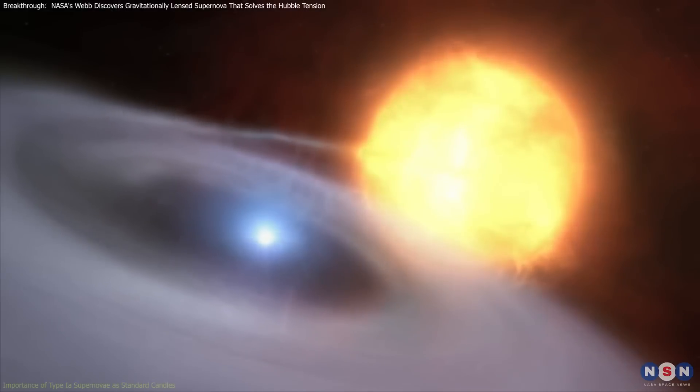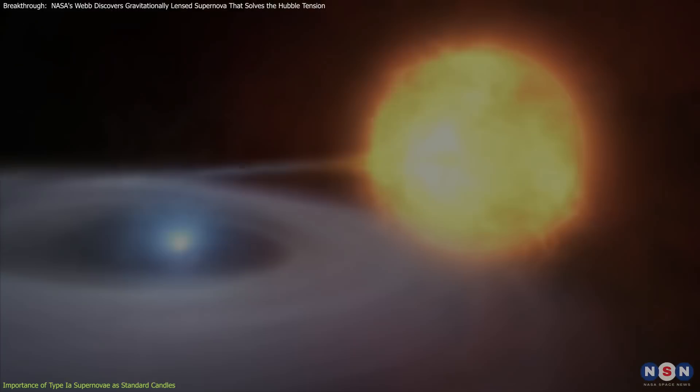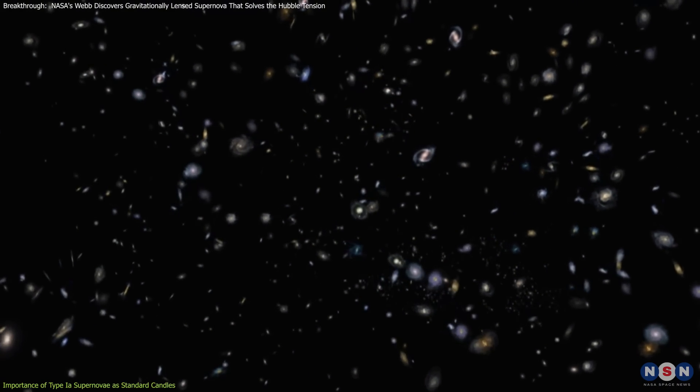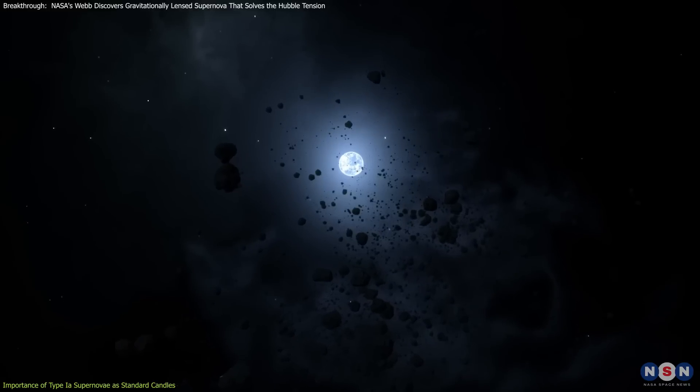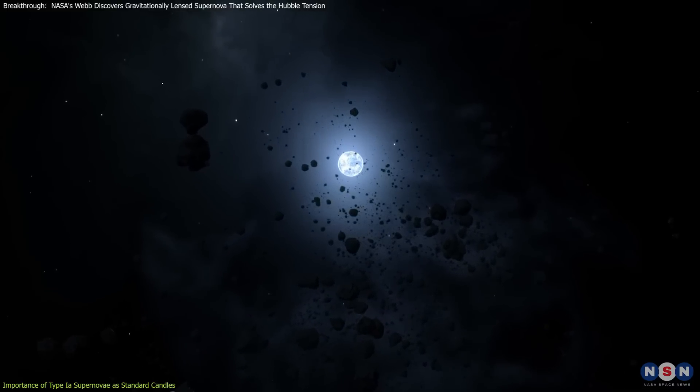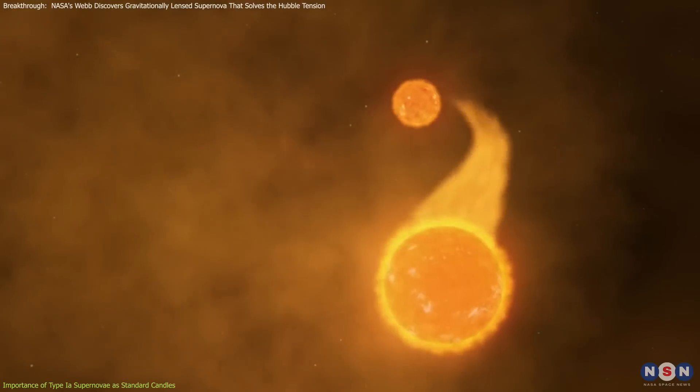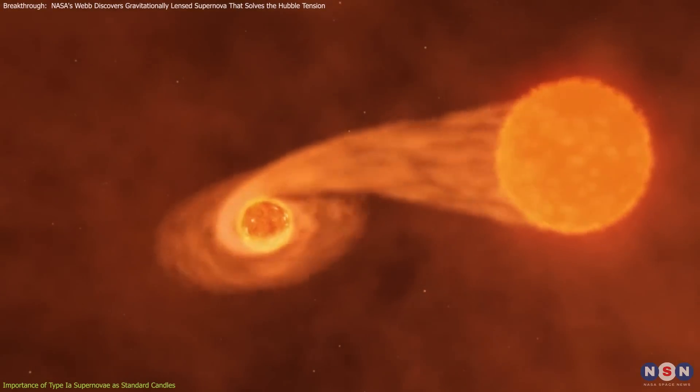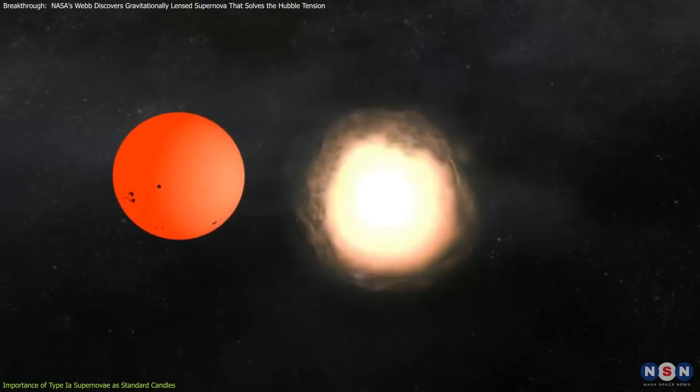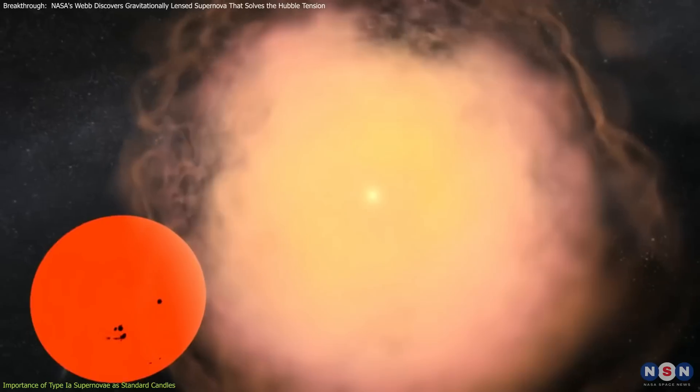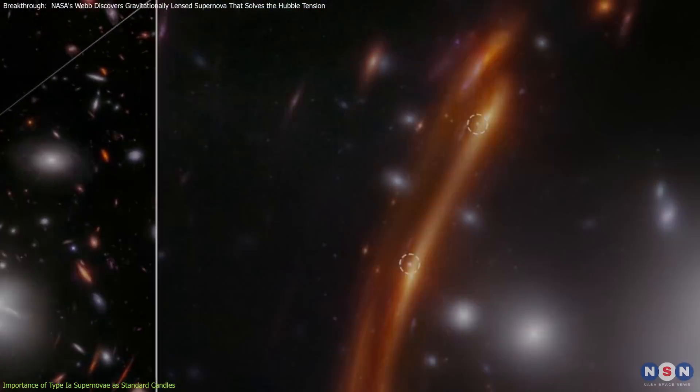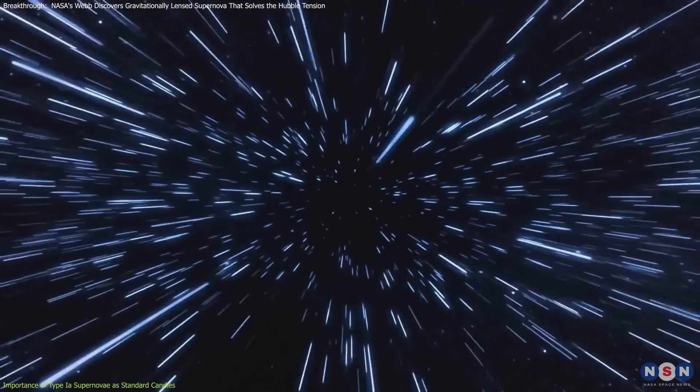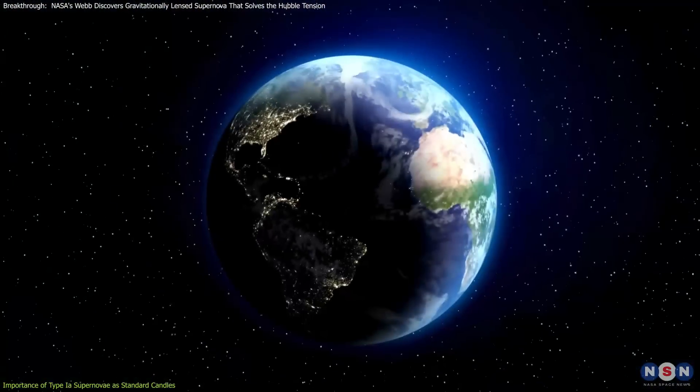Type 1a supernovae are incredibly reliable tools for measuring the expansion of the universe due to their predictable nature. This predictability comes from the explosion process itself. This type of supernova occurs when a white dwarf star, the remnant of a smaller star that has exhausted its nuclear fuel, accretes material from a companion star. Once it reaches a critical mass, the white dwarf undergoes a thermonuclear explosion, releasing a consistent amount of energy. Supernova Hope fits perfectly into this model. Astronomers can accurately determine its distance by measuring how much its light has dimmed on its journey to Earth.